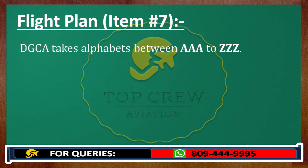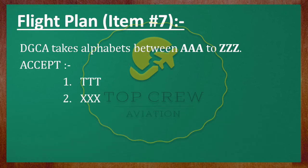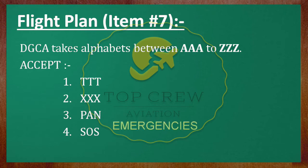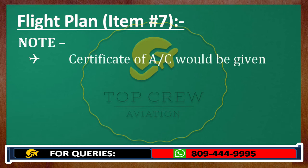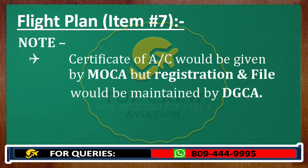DGCA takes alphabets from AAA to ZZZ, except there are four codes which are not used. When I say not used, I mean DGCA does not use them. Those four are: TTT, XXX, PAN, and SOX. DGCA cannot use these four codes in registration because they are already being used in emergencies. Note: the certificate of aircraft would be given by MOCA, but registration and files would be maintained by DGCA. This is very important.